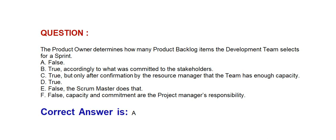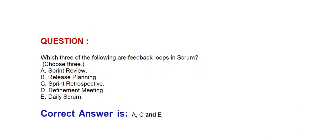Question: The product owner determines how many product backlog items the development team selects for a sprint. Option A: False. Option B: True, accordingly to what was committed to the stakeholders. Option C: True, but only after confirmation by the resource manager that the team has enough capacity. Option D: True. Option E: False, the scrum master does that. Option F: False, capacity and commitment are the project manager's responsibility. Correct answer is Option A: False.